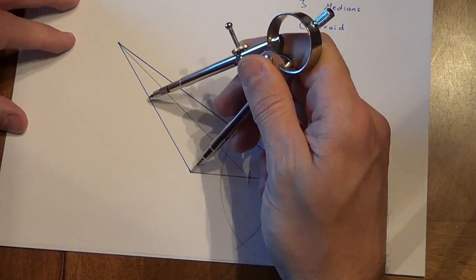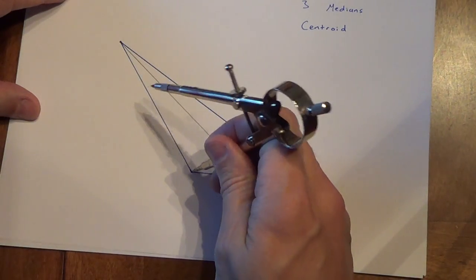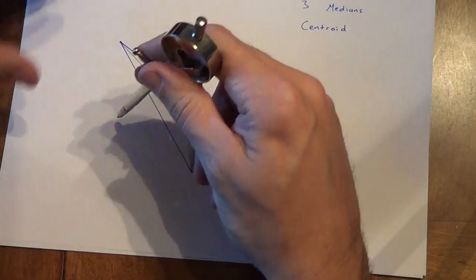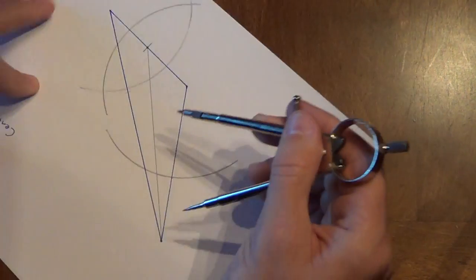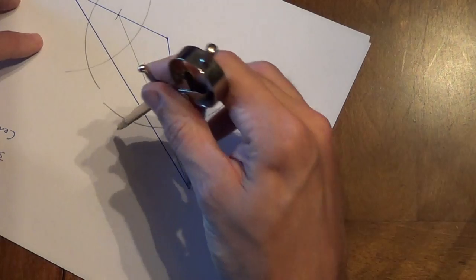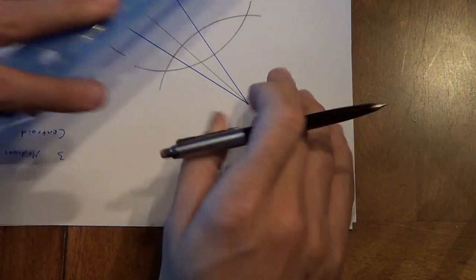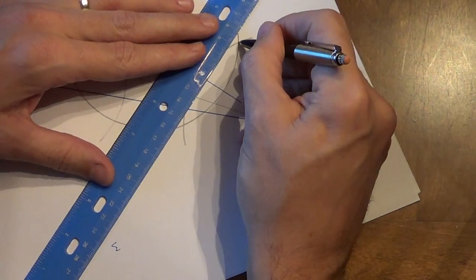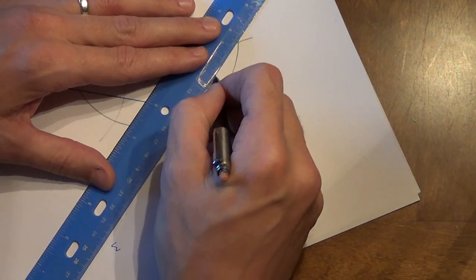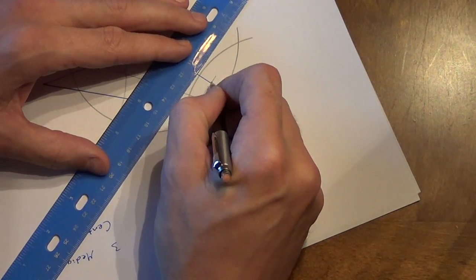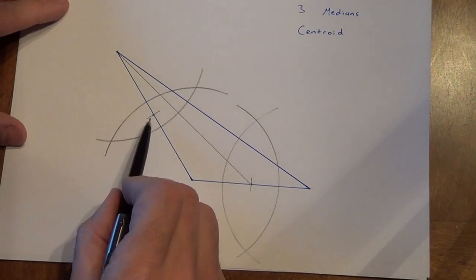My compass looks like it's probably opened wide enough. It might want to open a tiny bit wider. Here we go. First arc. Second arc. Line my ruler up with these two again. Remember, you don't need to draw the whole thing. Just draw a little mark. That little point right there.